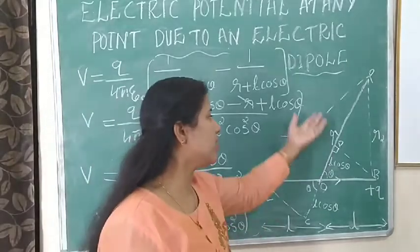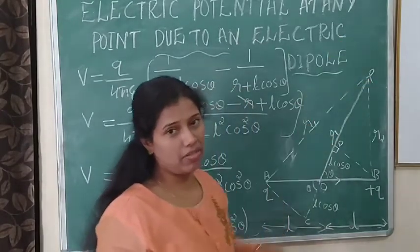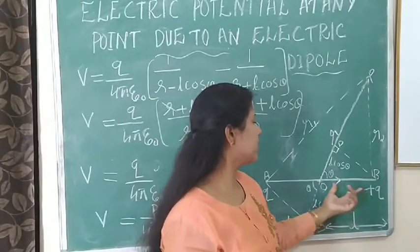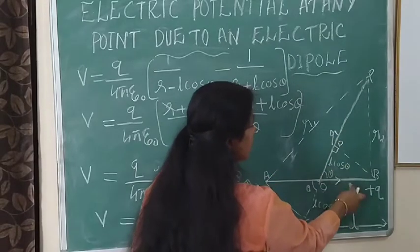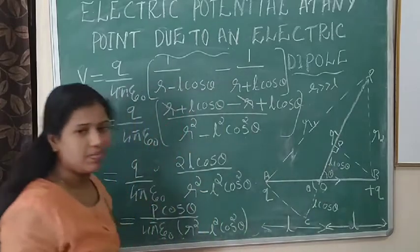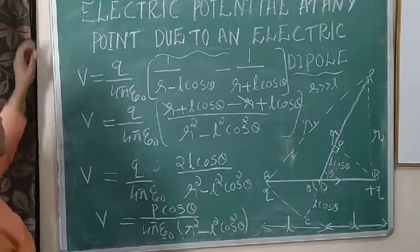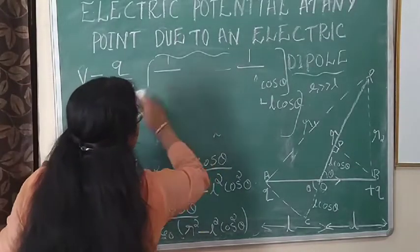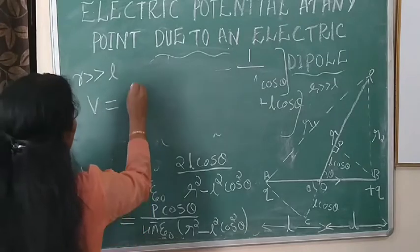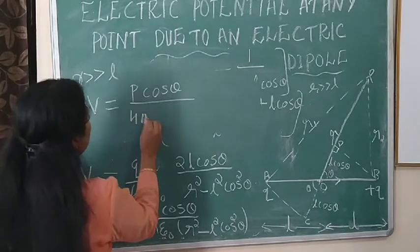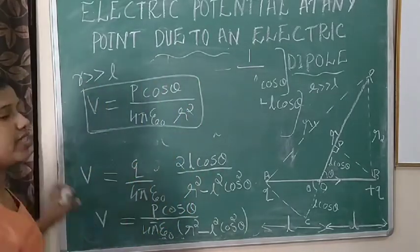Now we consider a special case: if the point P is very far from the dipole, then R is much greater than L, so L is very small and we can neglect the L squared cos squared theta term. Then the final simplified equation becomes: V equals P cos theta divided by 4 pi epsilon naught into R squared, valid when R is much greater than L.